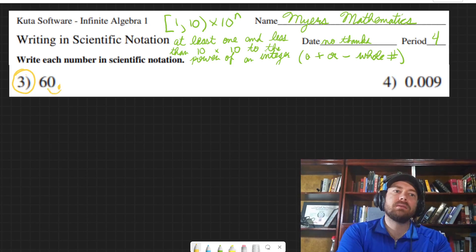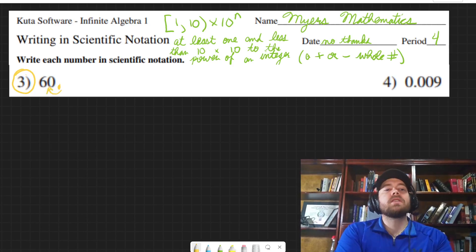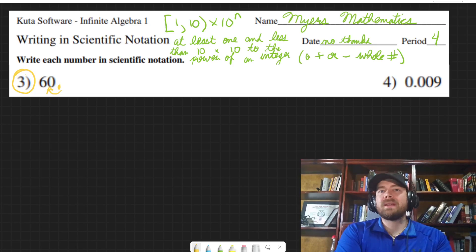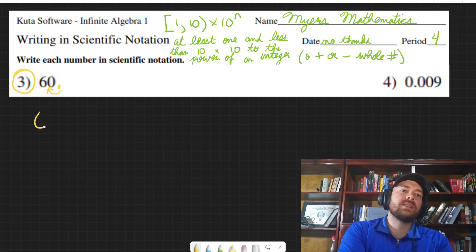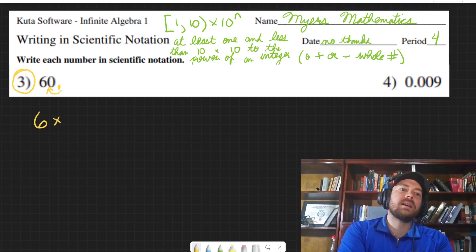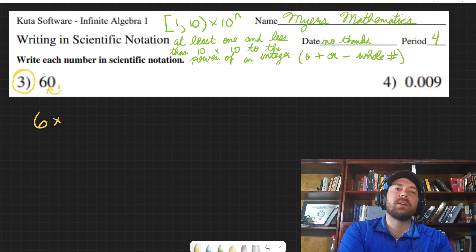It's always after the last visible number. So we need to move it over one space to make it a six. Six is a number between one and ten, so that's going to be six times... and then sixty is a number that's bigger than six. We're trying to make a big number, so we need a positive power.